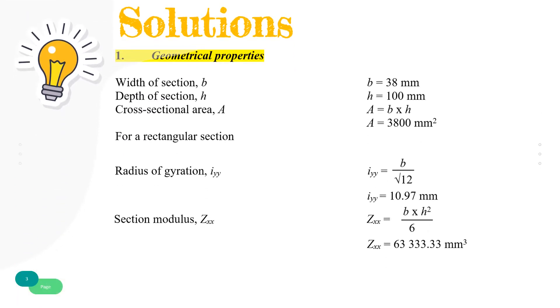The first step is to determine the geometrical properties of the cross section to be calculated: cross sectional area, radius of gyration, and section modulus using the respective formulas as shown in slide. These values will be used in the next steps.